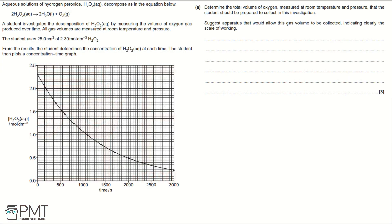Aqueous solutions of hydrogen peroxide, H₂O₂(aq), decompose as in the equation below. A student investigates the decomposition of H₂O₂(aq) by measuring the volume of oxygen gas produced over time. All gas volumes are measured at room temperature and pressure. The student uses 25 cm³ of 2.30 mol dm⁻³ H₂O₂. From the results, the student determines the concentration of H₂O₂(aq) at each time, then plots a concentration-time graph.